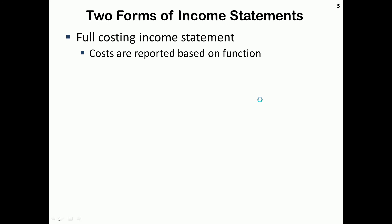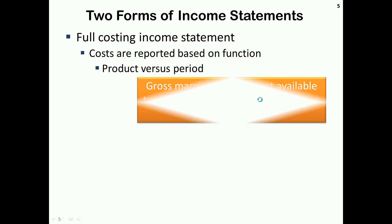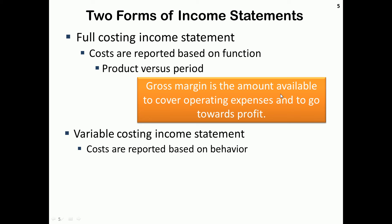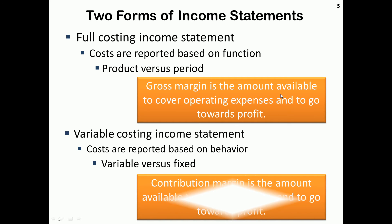There are two forms of income statements. The full costing income statement reports costs based on function — product versus period — and has an important subtotal called gross margin, which you're probably familiar with from financial accounting. Sales minus cost of goods sold equals gross margin, which is the amount available to cover operating expenses and to contribute towards profit. The variable costing income statement reports costs based on behavior — fixed versus variable — and has a very important subtotal called contribution margin, which is the amount available to cover fixed costs and to go towards profit.